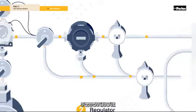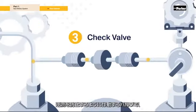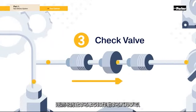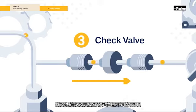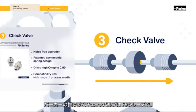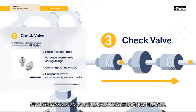The check valve is a valve that operates to prevent fluid from flowing in the opposite direction and is essential for the stability of the gas delivery system. The check valve recommended by Parker is the F9 series, which features noise-free operation with a patented spring design.